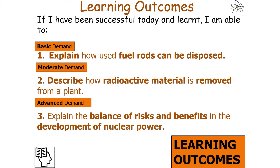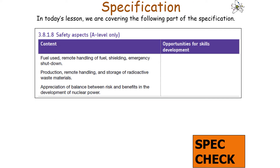If we've been successful in today's lesson, we should be able to explain how fuel rods can be disposed of, describe how radioactive material is removed from a plant, and explain the balance of risks and benefits in the development of nuclear power. We'll be covering AQA A-level physics specification section 3.8.1.8: safety aspects.